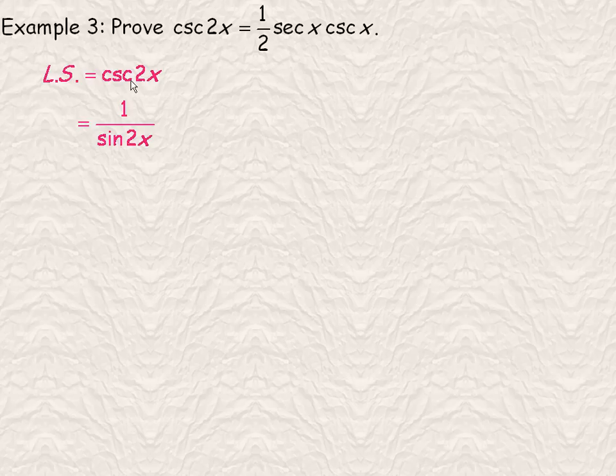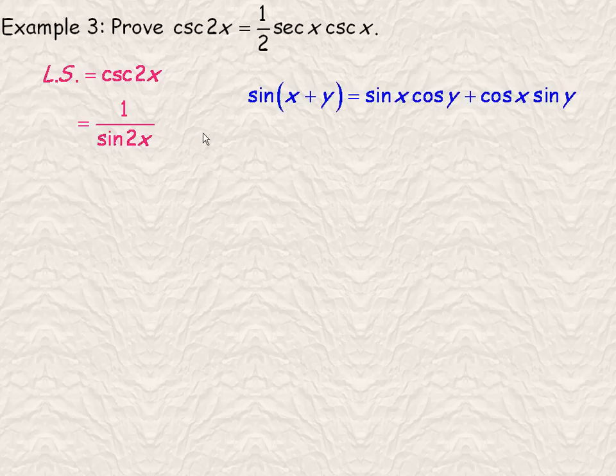Now, cosecant is the reciprocal of sine. So csc 2x would be equivalent to 1/sin 2x. That's one of those reciprocal identities from the first page of the note.